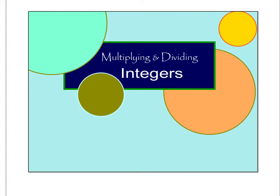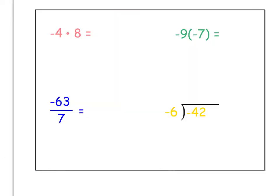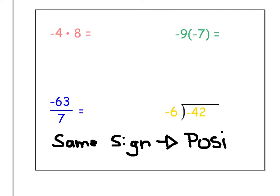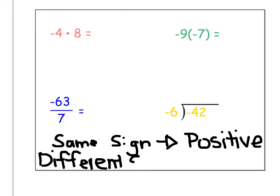Finally, we're going to talk about how to multiply and divide integers. The important thing to remember when you're multiplying and dividing integers is that if you have the same sign, you are going to have a positive answer. If you have a different sign with the two numbers, that means you are going to have a negative answer.